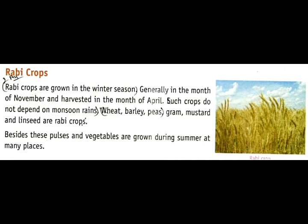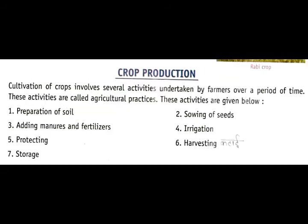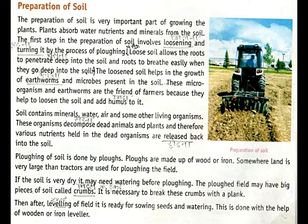We are studying two main crops here: Kharif crops and Rabi crops. Now, how are these crops produced? There are six or seven processes involved in the production of crops. These are: preparation of soil, sowing of seeds, adding manures and fertilizers, protecting from weeds, watering of plants, harvesting, and storage.